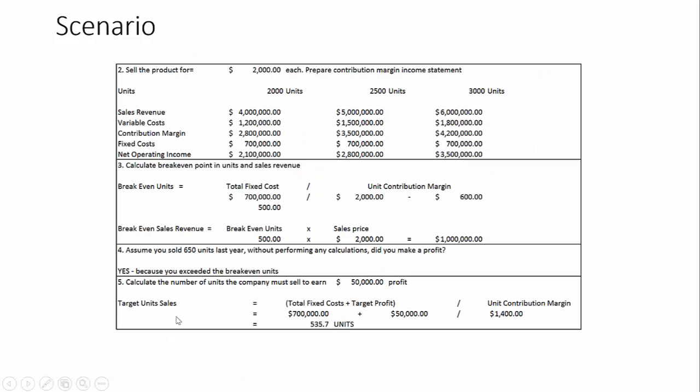Next, let's calculate the number of units the company must sell to earn a $50,000 profit. We take total fixed costs plus the target profit and divide by the unit contribution margin. That unit contribution margin is $2,000 minus $600, which equals $1,400. So $700,000 plus $50,000 divided by $1,400 gives us 535.7 units, meaning we need to sell 536 units to make a $50,000 profit.